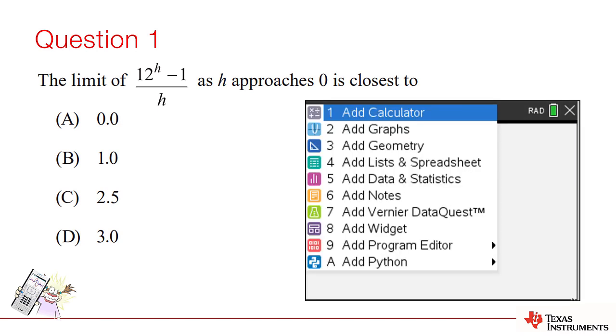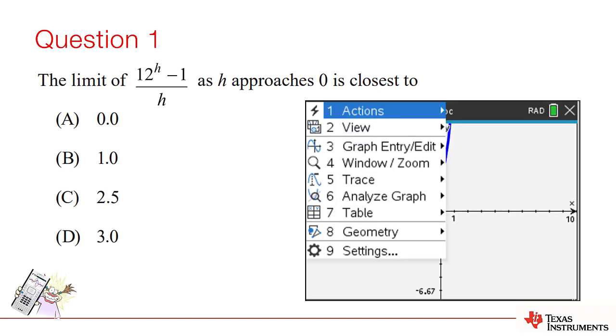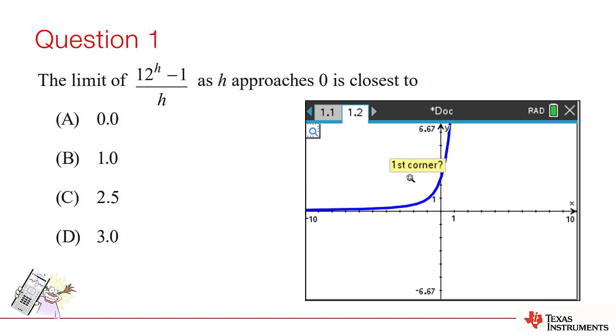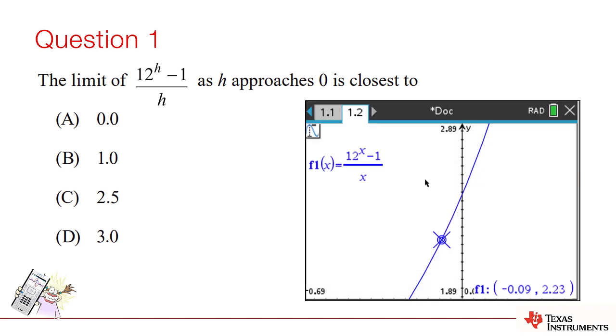A graph is a quick way of checking if the limit is the same from both sides. Change the h to an x so you can graph it. Then, zoom in on the y-axis and trace the graph. So, the answer to the first question is option C.